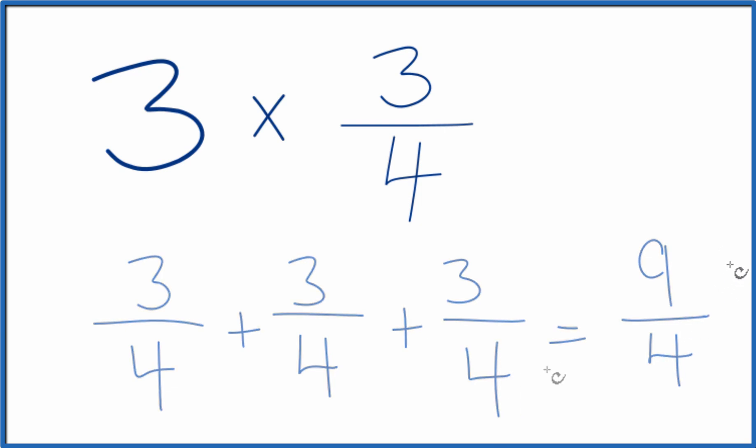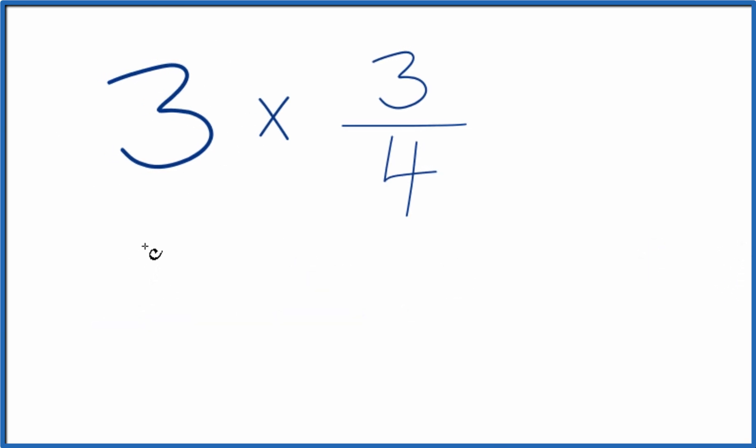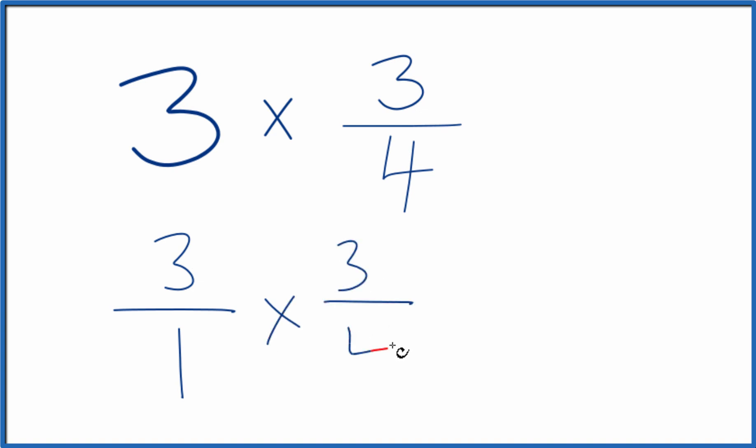The other way you could do this is you could call 3, 3 over 1. It's still 3. We're just dividing by 1. But now we have a fraction. And then we could just multiply that times 3 fourths.